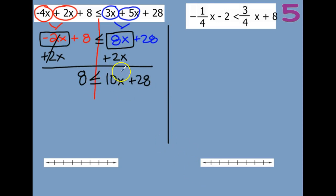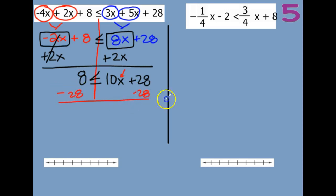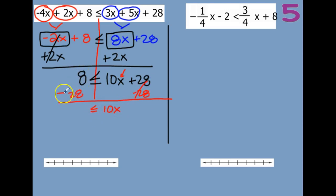So we need the x all by itself, so I'm going to subtract 28. So I have 10x is less than or equal to — and then 8 minus 28: there's more negatives, there's 20 more, so negative 20.